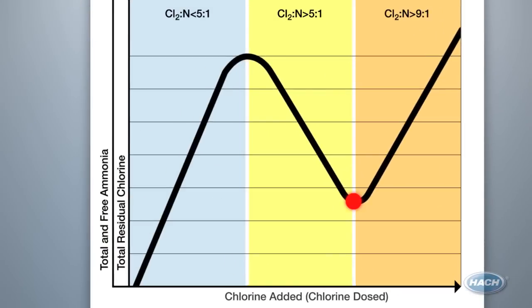Once you pass the point where you have fully bonded all the nitrogen from the ammonia with the chlorine, you return to the original chlorine curve, where for every part of chlorine you dose, you will see one part of chlorine residual.